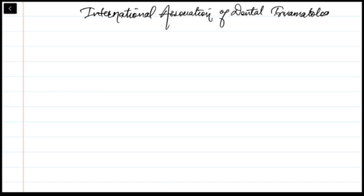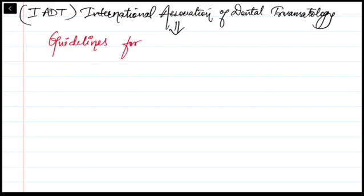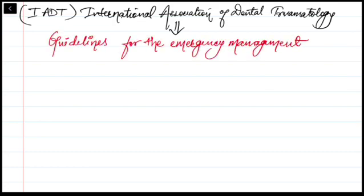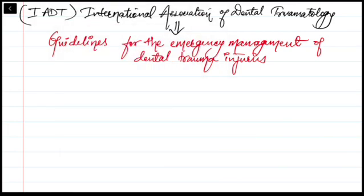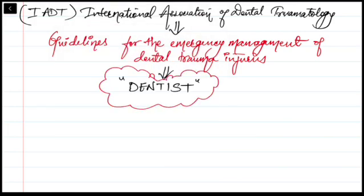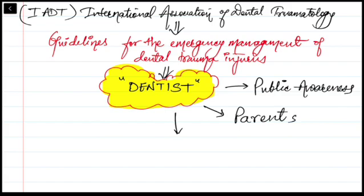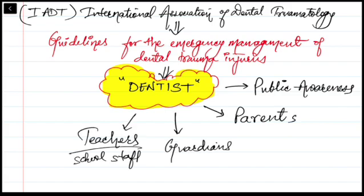In this video, I'm summarizing the International Association of Dental Traumatology (IADT) guidelines for the emergency management of dental traumatic injuries for avulsion in permanent teeth. There will be a part on open apex as well as closed apex. These guidelines are meant for dentists or other healthcare professionals, but are also very important for public awareness to make sure parents, guardians, teachers, and sport facility staff are educated.